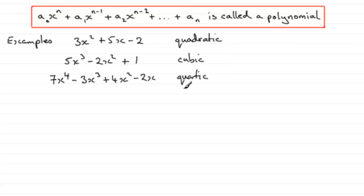With polynomials, you need to know about terms. A quadratic, this quadratic anyway, has 3 terms. This cubic also has 3 terms, and this quartic has 4 terms.